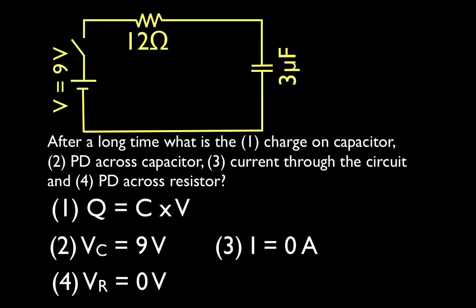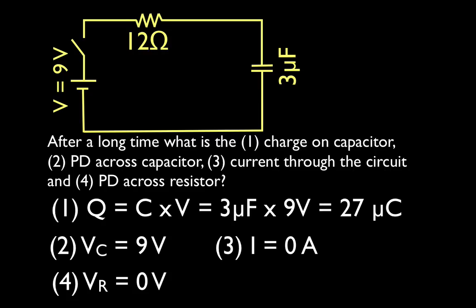Now we can solve for the charge — how much charge is on the capacitor? Using Q equals C times V, we have a 3 microfarad capacitor, and after a long time the voltage of the capacitor equals the voltage of the battery, in this case nine volts. So Q equals 3 times 9, which is 27 microcoulombs. That is the charge after a long time, after time equals infinity.